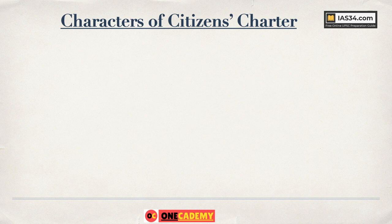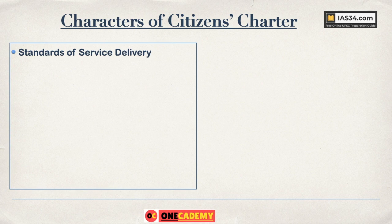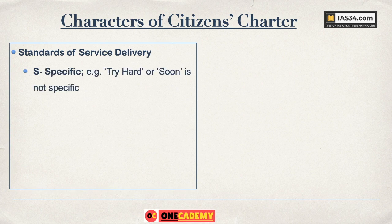Now let's learn the characteristics of a Citizens Charter. First, it has standards of service delivery. For example, a tehsil office might deliver land-related matters, issue caste certificates, birth certificates, and so on. These services must have some kind of standards — and these standards are called SMART standards: S-M-A-R-T.